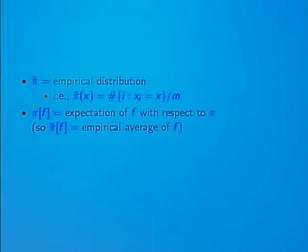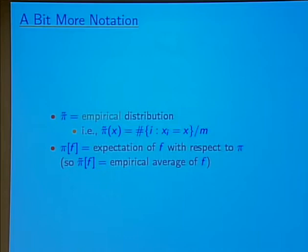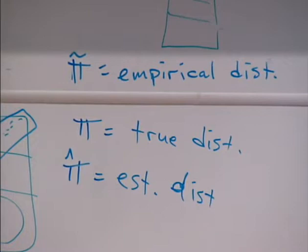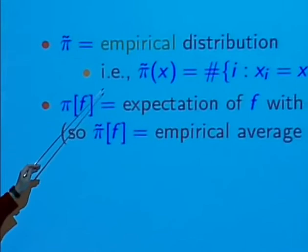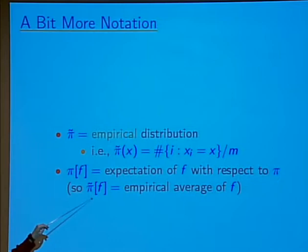A bit more notation: I'll write pi-twiddle for the empirical distribution. This puts probability one-over-m on each of the points observed in the sample and zero on all the others — pi-twiddle is the empirical distribution. I'll use this notation where pi-bracket-f means the expectation of f with respect to distribution pi. So pi-twiddle of f is just the empirical average of the function f — the average over the training samples.